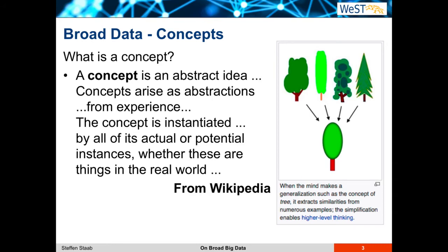When I try to explain broad data, I have to talk about concepts. What is a concept? A concept is an abstract idea that arises as an abstraction from experience. The concept is instantiated by actual instances representing things in the real world. That's what Wikipedia states. On the right you see an example: you have different kinds of trees occurring in the real world, and you abstract into the concept of a tree and you define how to represent all these instances in your system.